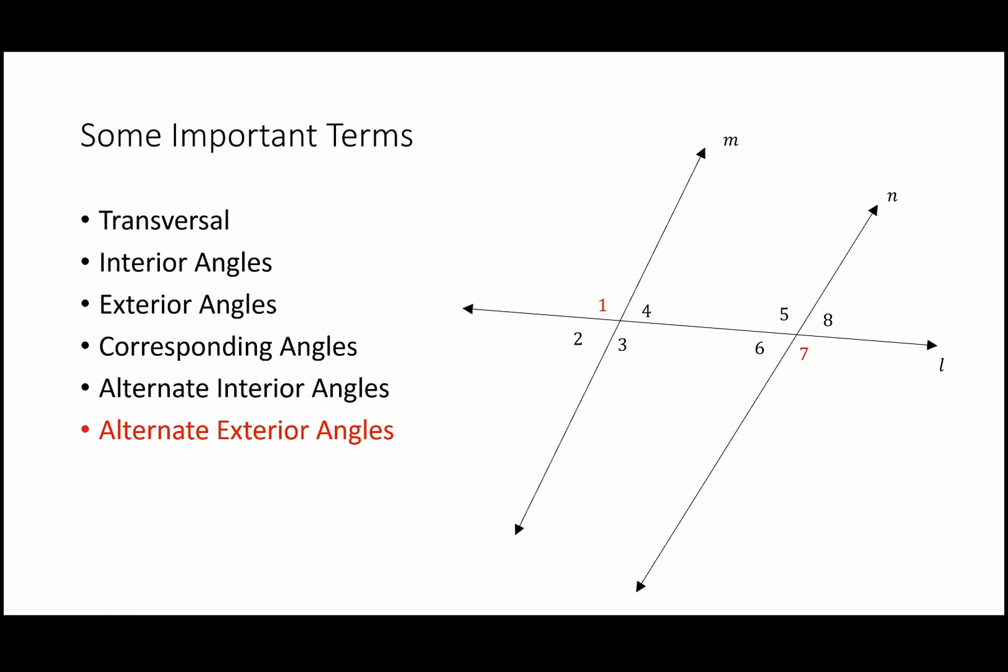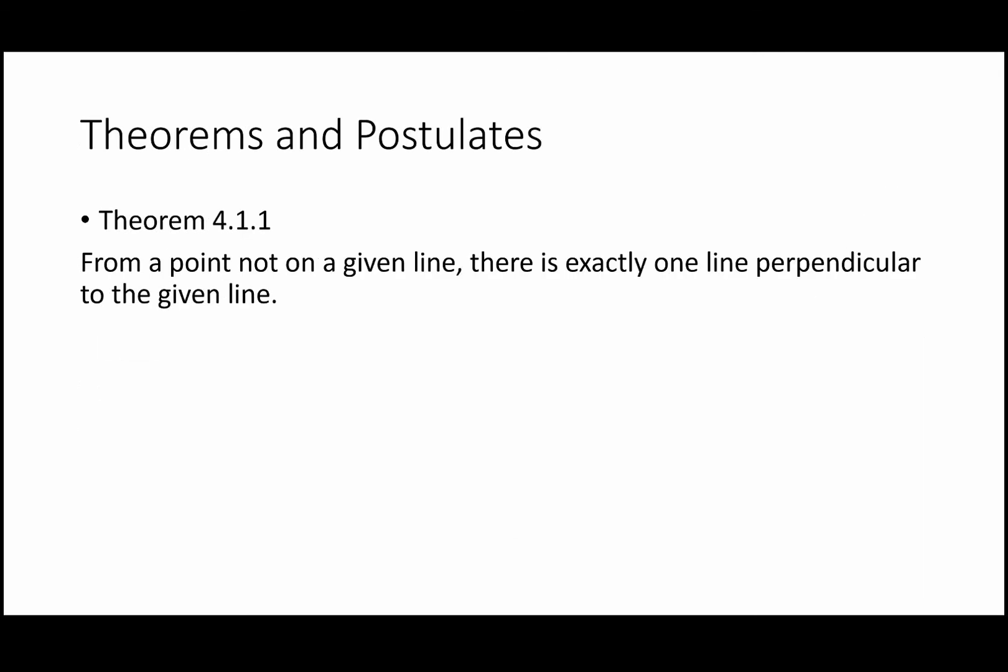If lines M and N — the lines being cut by the transversal — are parallel, then certain things can be stated definitively, either by postulate or by theorem, about the relationships between some of these angles. We'll introduce these characteristics by going through all the theorems and postulates in this section.